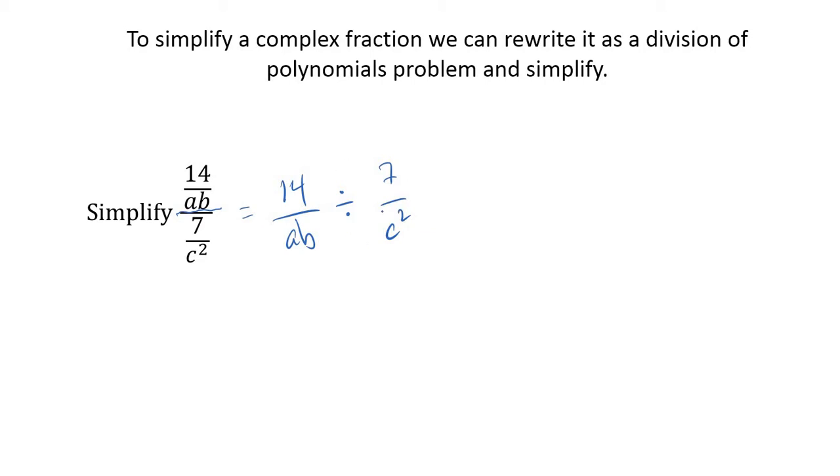This means 14 over ab divided by 7 over c squared. We simplified problems like this in the previous lesson. When we divide by a fraction, we rewrite it as a multiplication problem: 14 over ab times c squared over 7.